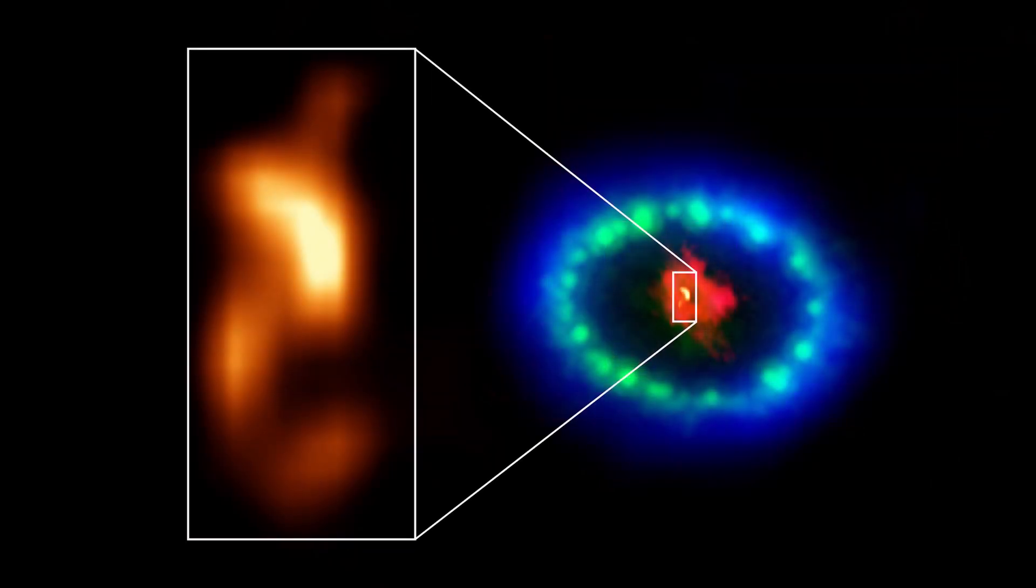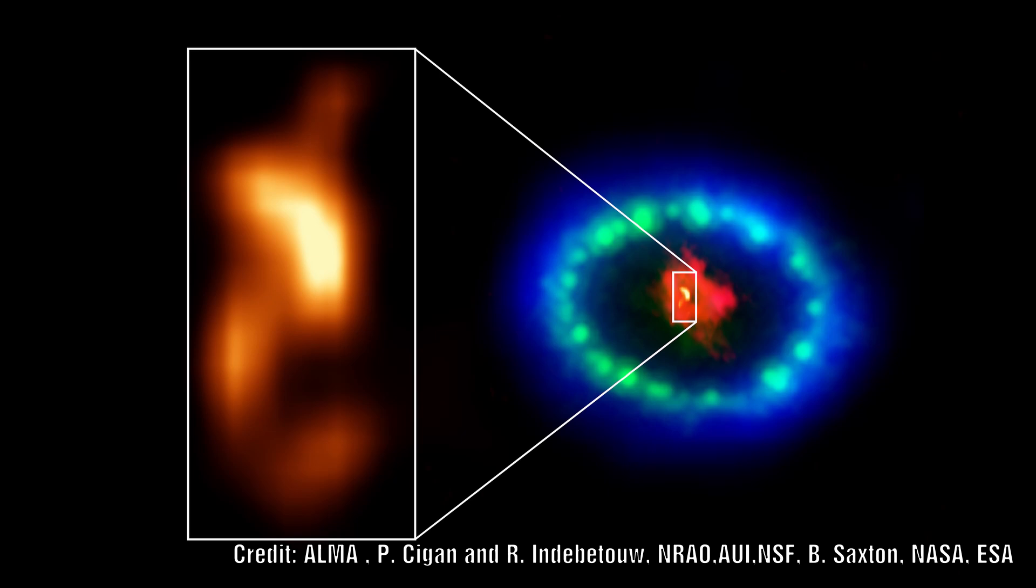Recent observations from the ALMA radio telescope provided the first indication that there was something left at the center. Extremely high resolution images revealed a hot blob in the dusty core of SN 1987A, which is much brighter than its surroundings and matches the suspected location of a neutron star.